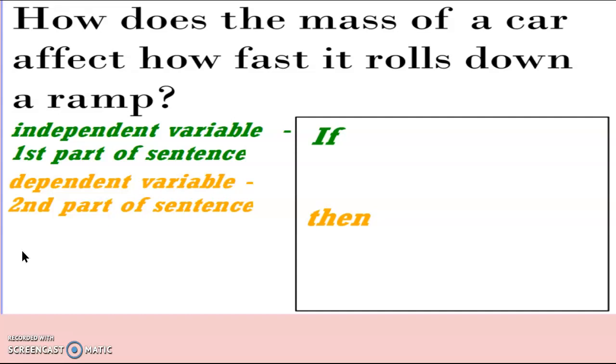And then after the word then, you'd end up writing what's your dependent variable, the second part of your sentence, would be what you would measure, what you think would end up being your resulting measurement. So take a moment and write a hypothesis.